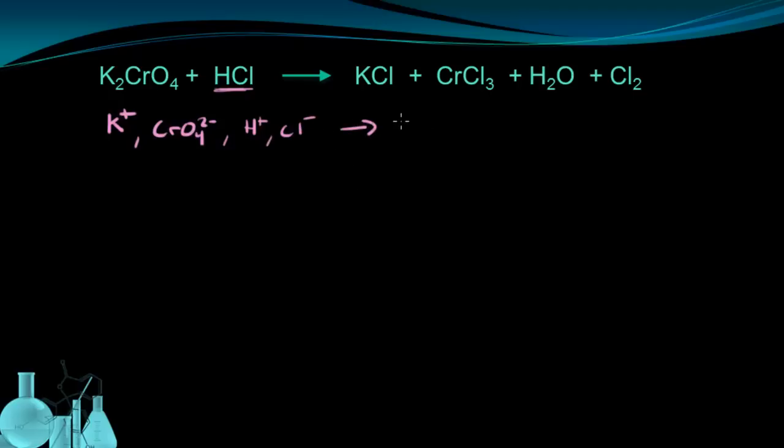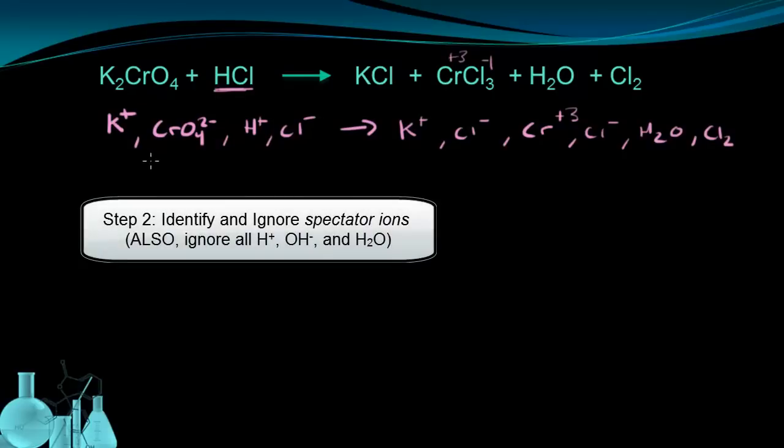On the other side, again, I have K-plus from the KCl, Cl- from the same compound. This chromate right here has to be a plus three to balance out the negative one chlorines. And again, I have chlorine showing up. I also have a water molecule, and I have elemental chlorine, diatomic chlorine. So the first thing I want to do is ignore anything that shows up the same on both sides, because obviously it's not being oxidized or reduced. So right away, I can eliminate K-plus.